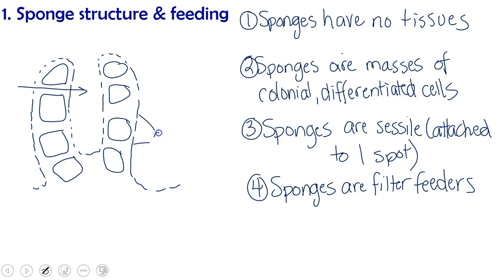On the outside, these little holes are called ostia. And this is where the water enters the sponge as the sponge is filtering. And then the water comes up and goes out of the large hole at the top which is called the osculum.